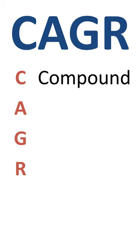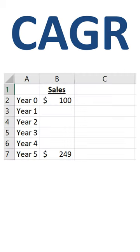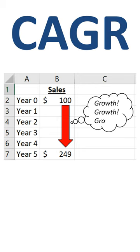CAGR is short for Compound Annual Growth Rate, with the verb to compound meaning to multiply — growth on top of growth. What if a company currently has $100 million in sales and wants to be at $249 million five years from now? What growth rate would get you from A to B?